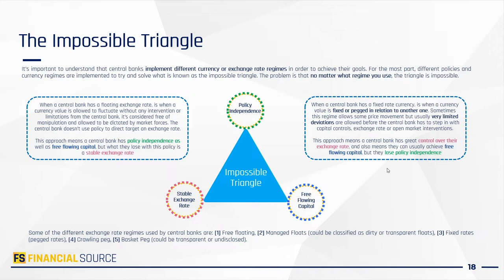The benefit of a fixed rate exchange regime is that you have complete control over the exchange rate, achieving a stable exchange rate — the bottom left of the impossible triangle — and it also doesn't limit the free flow of capital. But what you lose is policy independence. If you're a central bank that keeps your currency pegged and fixed, there isn't really any policy independence, which can sometimes lead to markets not trusting the currency.